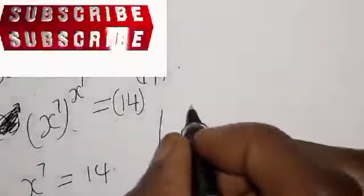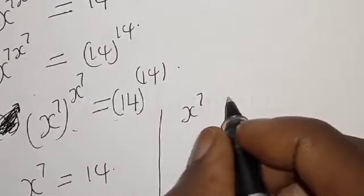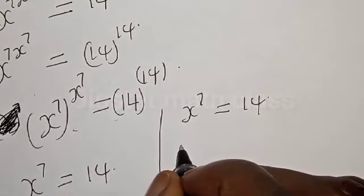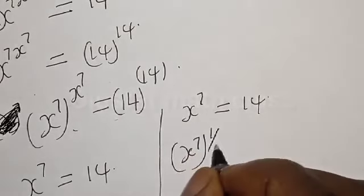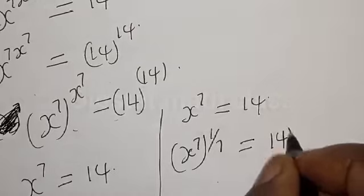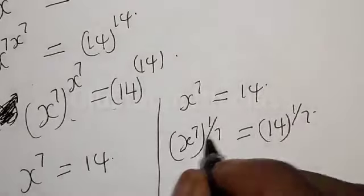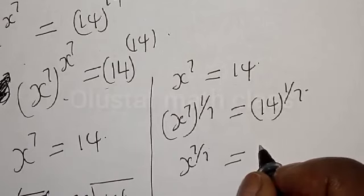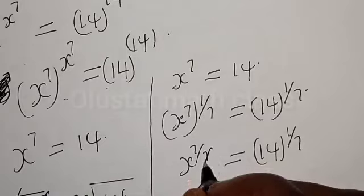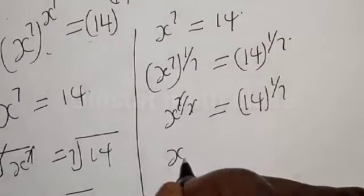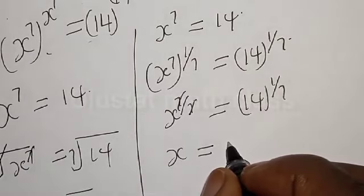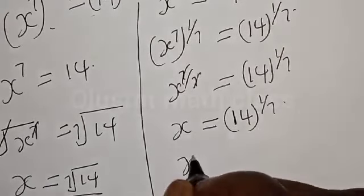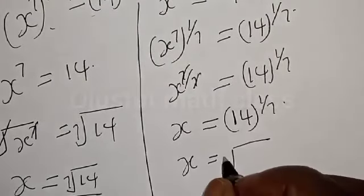Alternatively, we have s to the power 7 is equal to 14. Now let's raise both sides to the power of 1 over 7. That is: s to the power 7 multiplied by 1 over 7, is equal to 14 raised to the power 1 over 7. We get s to the power 7/7, which simplifies — the 7s cancel — giving s is equal to 14 raised to the power 1 over 7. Therefore, our final answer is s equals the seventh root of 14.